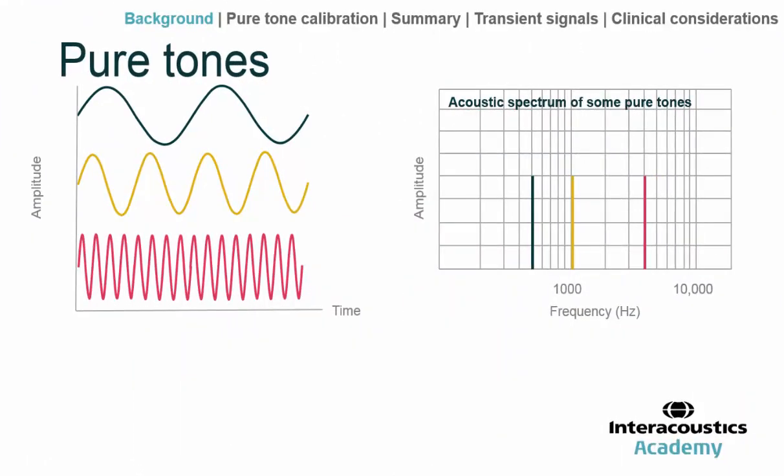An ideal starting point is to consider pure tones — the simplest type of sound, just one frequency of vibration. These are very rare in nature. Real life sounds are much more complex with many frequency components and varying over time, for example speech. Whereas a pure tone over time is stable with just one frequency.